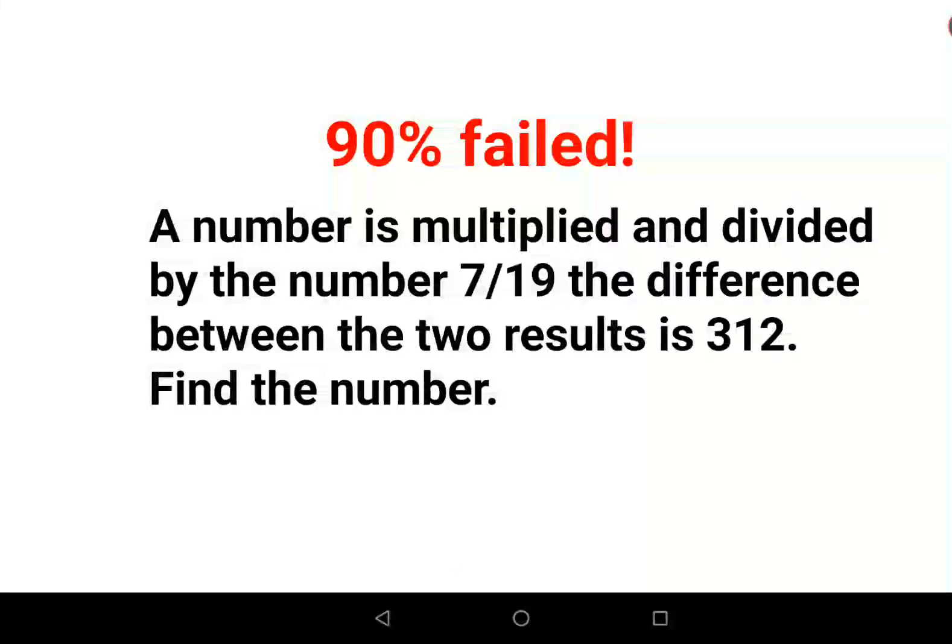Welcome everyone. This is a very nice question. A number is multiplied and divided by 7/19. The difference between the two results is 312, and we need to find the number.